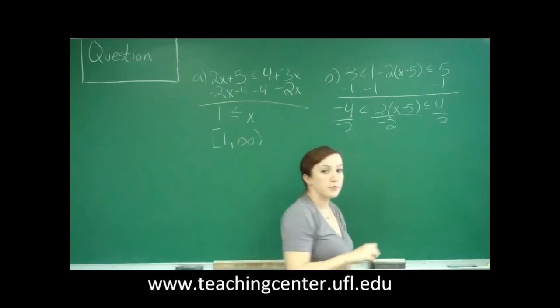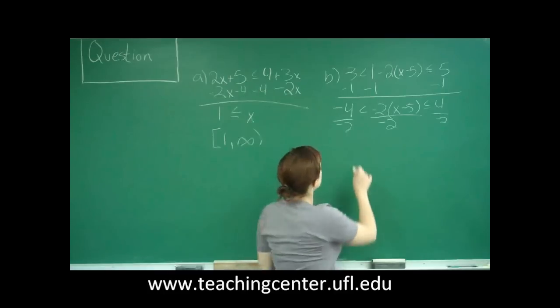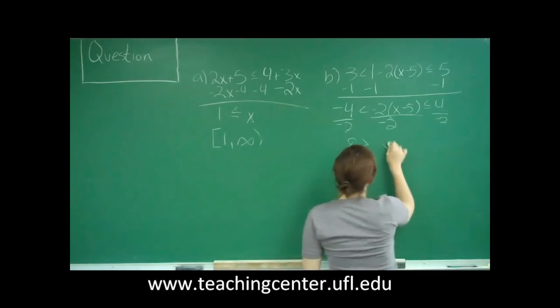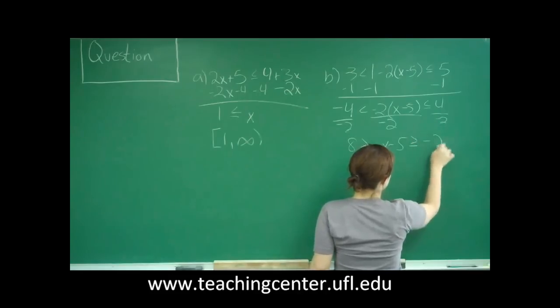So then I divide through by a negative 2 for every term. And remember when I divide through by a negative or I multiply by a negative, I flip my sign.